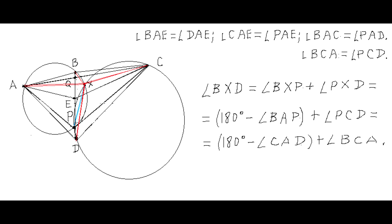Recall that segment AE is the angle bisector of angle DAB and also of angle CAK. This gives three pairs of equal angles: angles BAE and DAE are equal; angles CAE and DAE are equal; and angles DAC and DAE are equal. Analogously, angles DCA and PCD are equal.